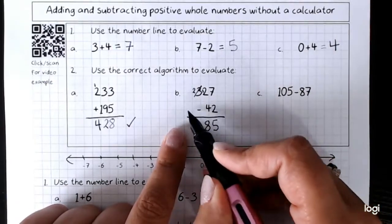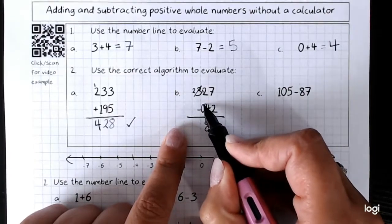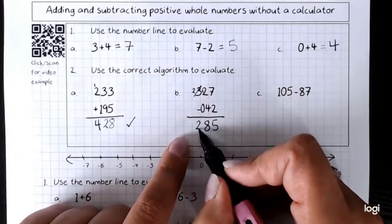And now we've got 2 take away nothing. If there's a gap, pop in the 0. Sorry, my minus is in the wrong spot there. 2 take away 0 is 2.